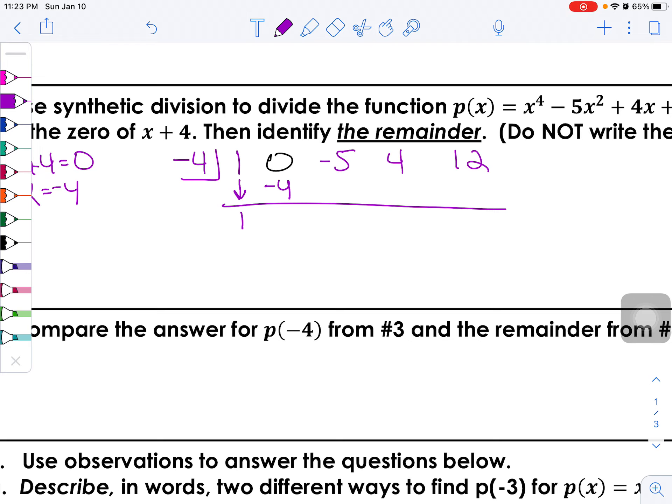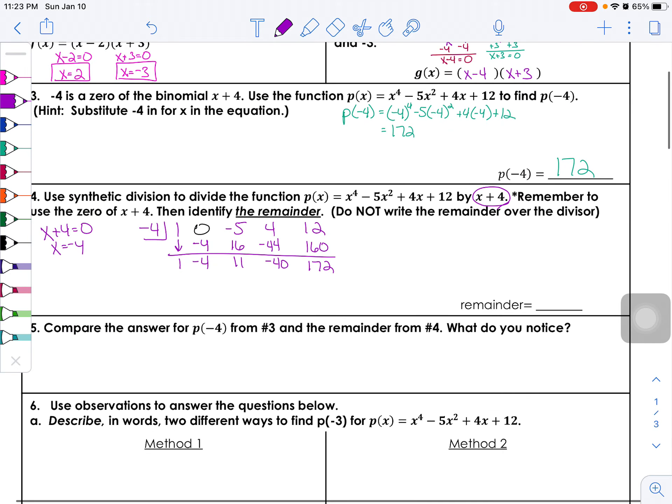All right, so I'm going to zoom in on that. First number, drop it straight down, multiply negative 4. Now we're going to add, multiply, add. Yep, that's 11. Multiply, so negative 44, add—what is that, negative 40? Yep. All right, and then negative 4 times negative 40 is going to be 160. And one more time I'm going to add this up—that's going to be 172.